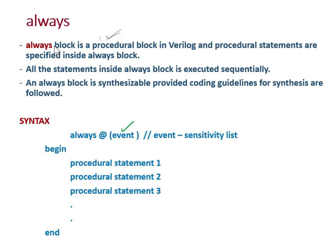The '@' symbol halts the execution of the always block until the sensitivity event occurs. The syntax is: always @(sensitivity list) begin ... end. These procedural statements inside begin and end are executed sequentially — first the first one, then the second, then the third, and so on.